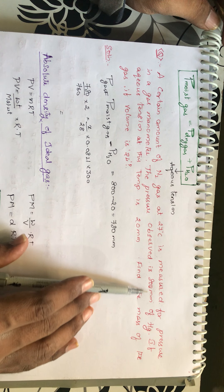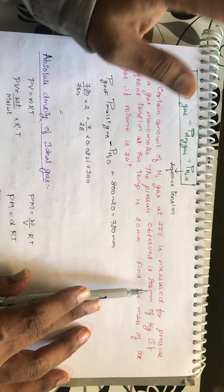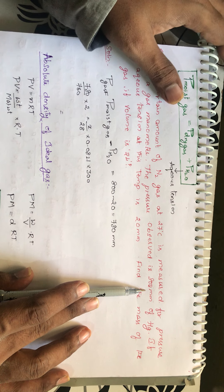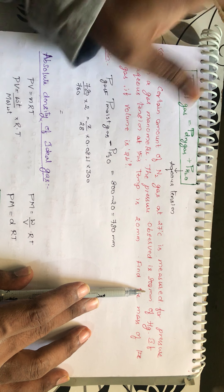The pressure observed is 800 mm of Hg. He is mentioning pressure. In the manometer, what is the pressure? It is 800 mm. This 800 mm is exerted by both dry gas as well as water vapor.